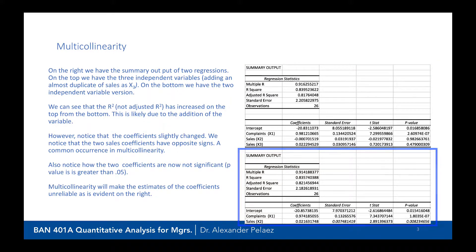We can see that the R-squared, not the adjusted R-squared, has increased on the top from the bottom. The top has 0.916 for the multiple R and 0.839 for the R-squared, and the multiple R at the bottom is 0.914 and 0.835. So the three-variable model has a higher value for the R-squared and multiple R.